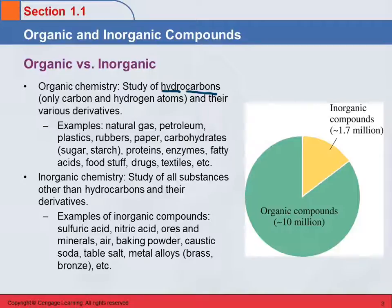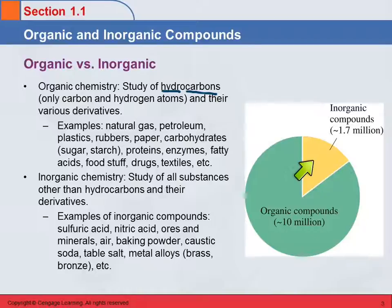We can divide chemistry into organic versus inorganic — inorganic is everything else. Looking at this pie graph, there are over 10 million organic compounds and only about 1.7 million inorganic compounds, so there's an incredible variety of organic compounds. At the grocery store, we tend to think of organic as safer — no pesticides. But in chemistry, a lot of pesticides are organic, so organic does not mean harmless in chemistry. There are also some examples of inorganic compounds shown here. Feel free to stop and ask questions at any time.